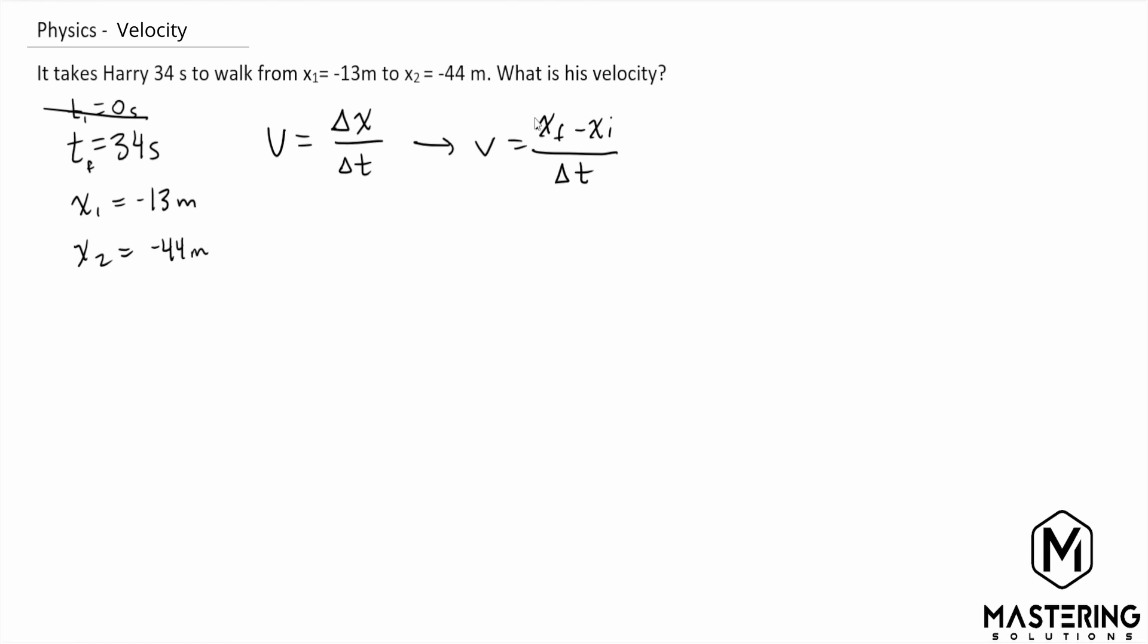Now that we have the equation here, we can plug in the numbers, which is velocity equals negative 44 meters - always write the units with it just to make sure that you're not getting yourself turned around. The x initial we started out from negative 13 meters, and then we did all of that in 34 seconds.